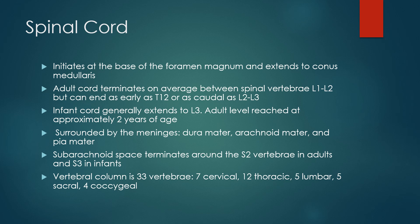The spinal cord is contiguous with the medulla in the brain stem, initiates at the base of the foramen magnum, and extends to the conus medullaris. The adult spinal cord in a male is about 18 inches long and terminates on average at about L2, but it can be earlier or more distal — somewhat variable. The infant cord extends somewhat lower to about L3, and adult levels are reached at about two years of age.